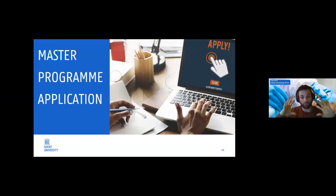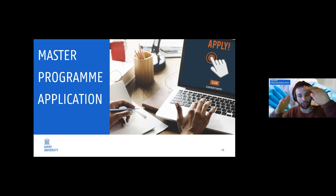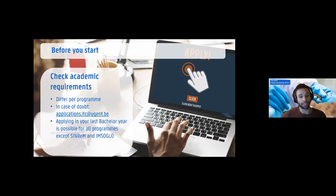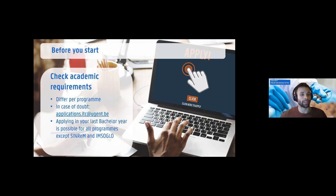Now that we've given you information about the programs, the city, the university, and the faculty, let's talk about how to apply. The first thing you need to do is check the program requirements — these are different for each program. If you're not sure, you can always send us an email at applications.itc@ugent.be — that's the one-stop shop for all questions about application.